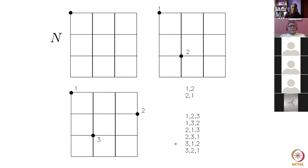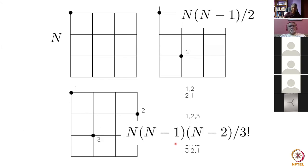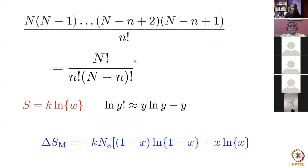That's N for the first atom, N(N-1)/2 for the two-atom case, N(N-1)(N-2)/3! for the third, and in general we come up with the general equation. When we take the logarithm using Stirling's approximation we end up with an entropy of mixing, and when I multiply this by minus T that gives us the free energy of mixing as a function of concentration — assuming we are mixing things at random, which is another way of saying we are dealing with an ideal solution where there is no change in enthalpy when we mix.